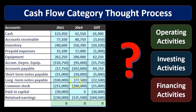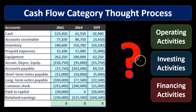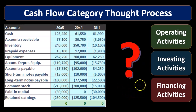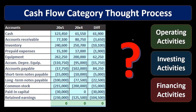That statement of cash flows has three major components: operating activities, investing activities, and financing activities. Our goal here is going to be to fill out these three components, and typically we will use a worksheet such as this on the left.